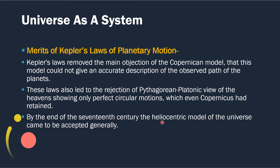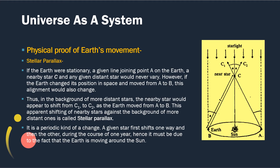By the end of the 17th century, the heliocentric model of the universe came to be generally accepted. Stellar parallax is the physical proof of earth's movement. Consider earth moving around the sun — starting from position A, it moves to position B in about six months, and back to A in another six months, completing one year.